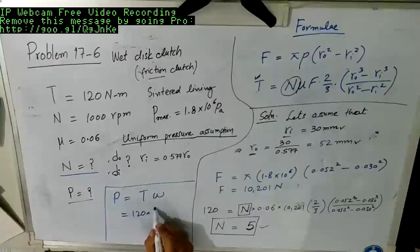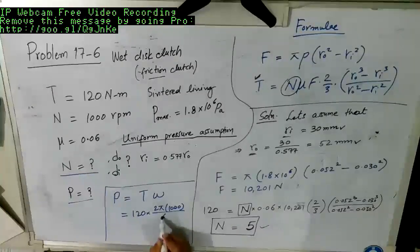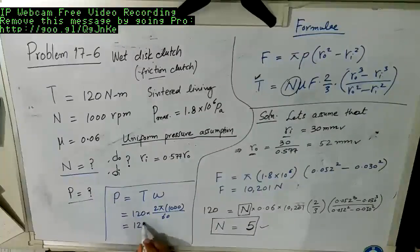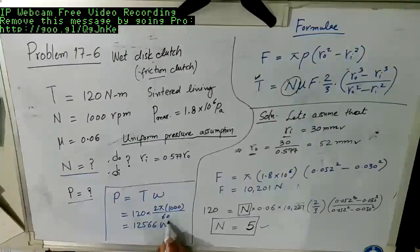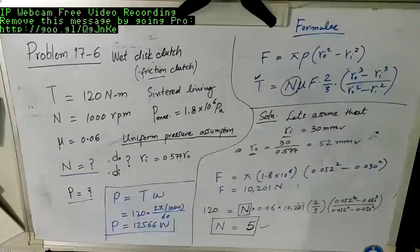This is going to be 2 pi times 1000 divided by 60. So the answer comes out to be 12,566 watt. So this is the answer for the power transmitted.